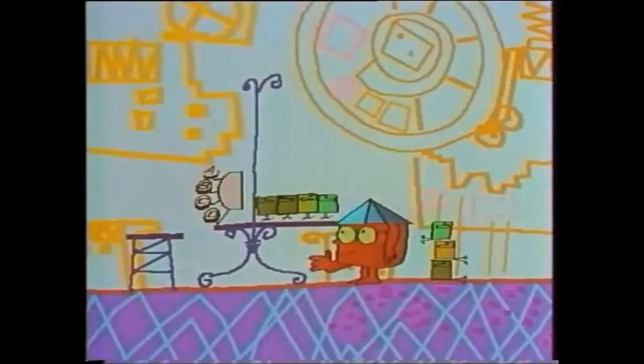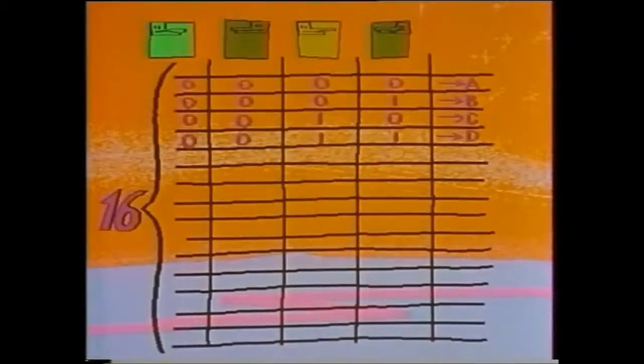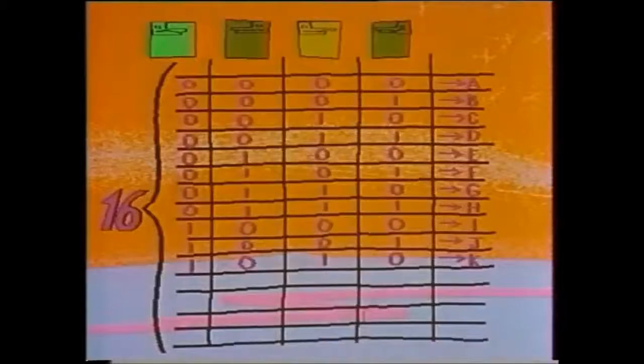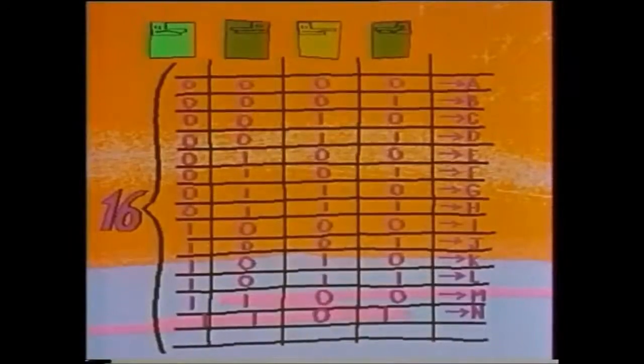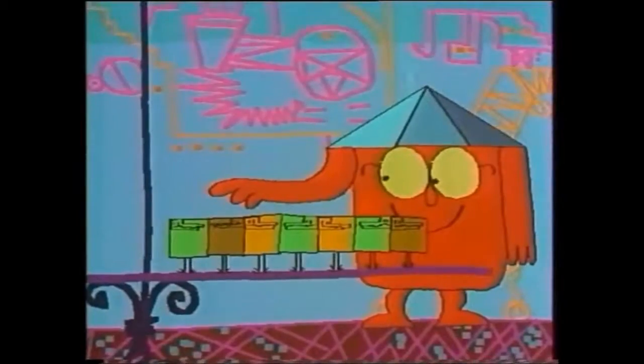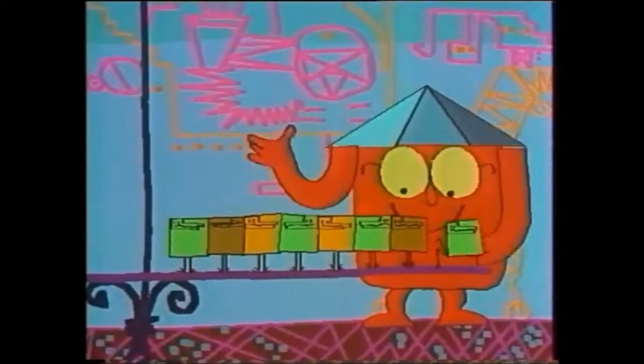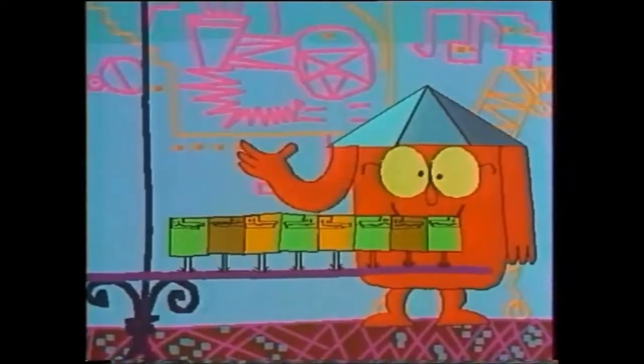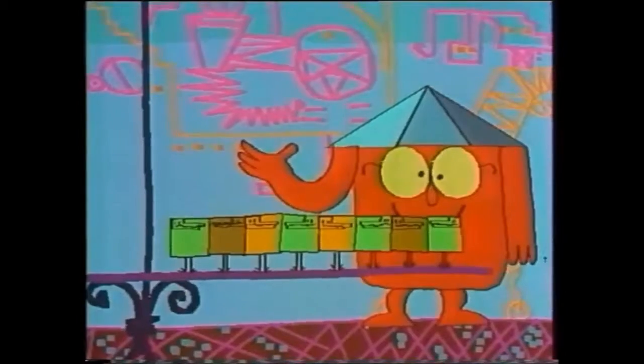With four squirks, we've got 16 possible combinations, and we can encode 16 different letters. Max Matic, who wasn't worried about the expense, decided to make groups of eight squirks.